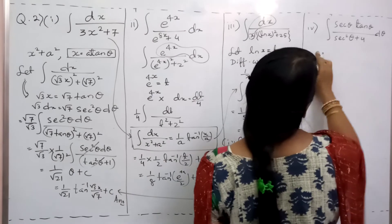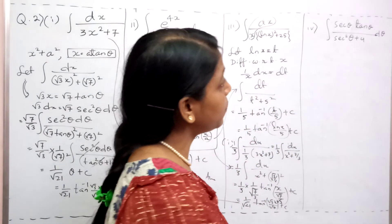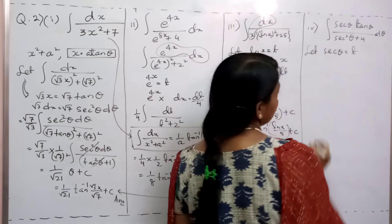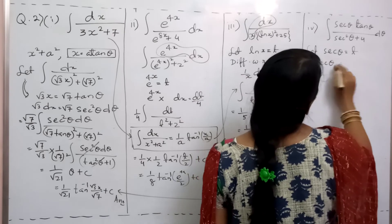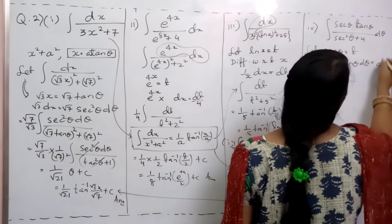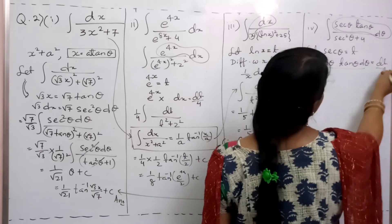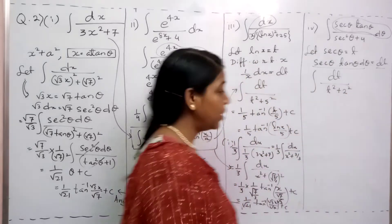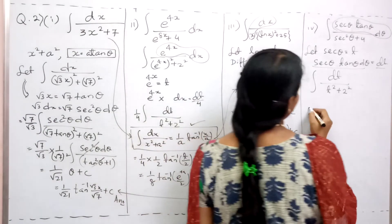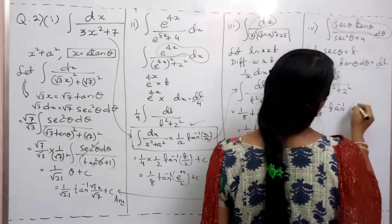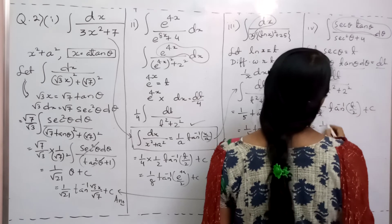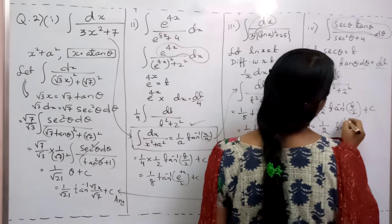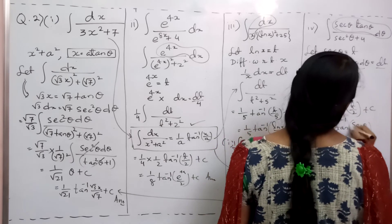You should know the technique. Now similarly here — what I have to assume as substitution so that the part will be present in numerator. Assume secant θ as t, so let sec θ = t. Differentiation of sec θ is sec θ · tan θ · dθ = dt. This part is directly present in the numerator as dt. So substitute: dt / (t² - 4) — can I write 4 as 2²? Directly in the format dx/(x² + a²). So the answer is (1/2) · tan⁻¹(t/2) + c = (1/2) · tan⁻¹(sec θ / 2) + c.